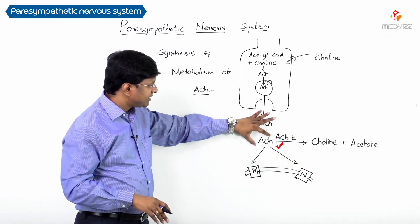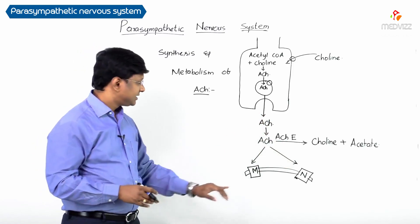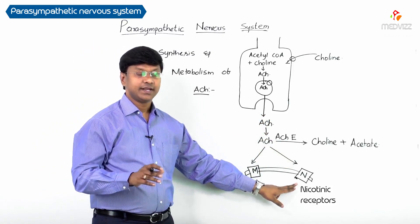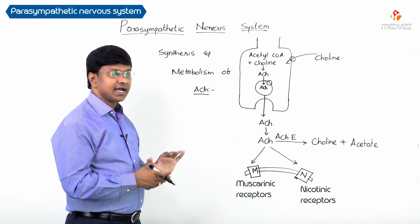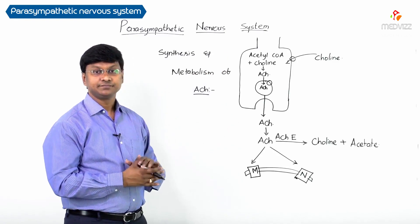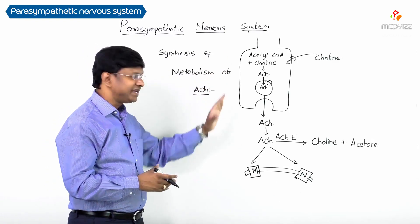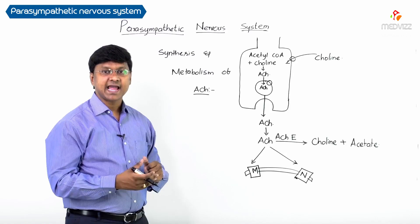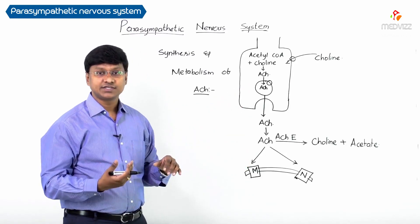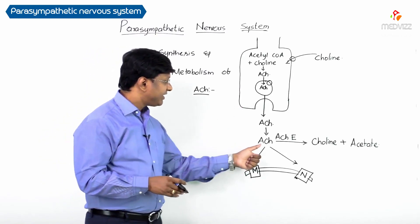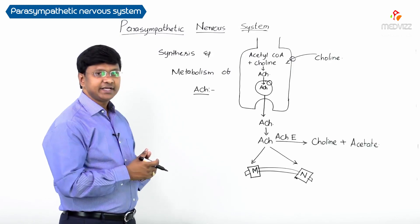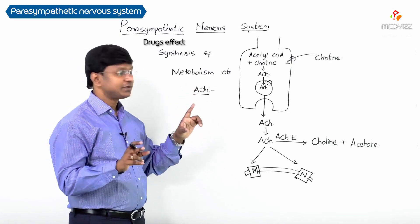In the presence of acetylcholinesterase, acetylcholine is metabolized into choline plus acetate. If it is not metabolized, the acetylcholine acts on muscarinic receptors as well as nicotinic receptors. There are many drugs which act to prevent the synthesis or metabolism of acetylcholine.